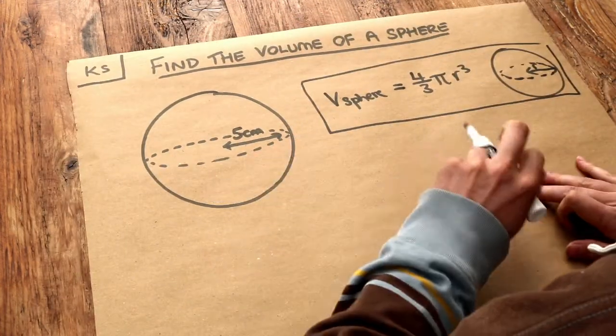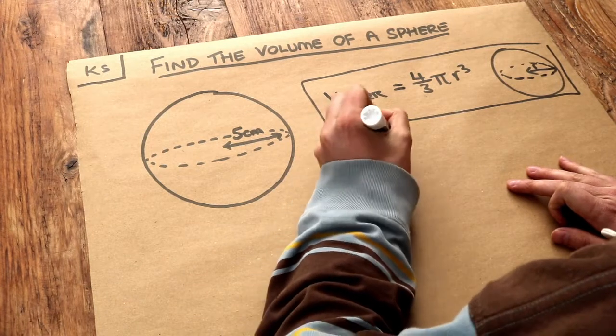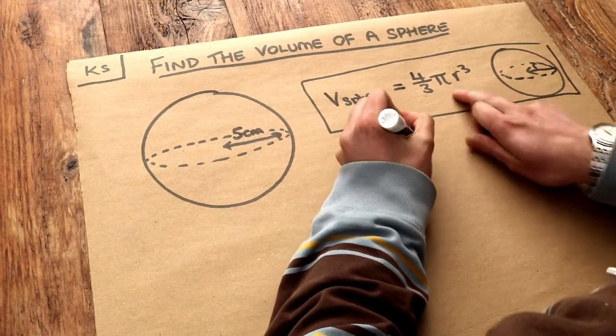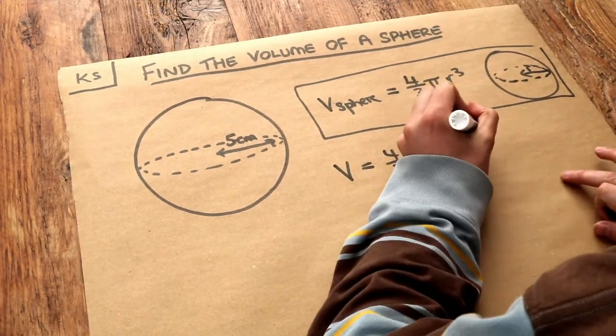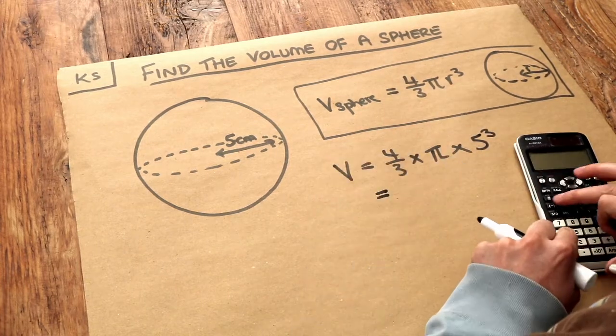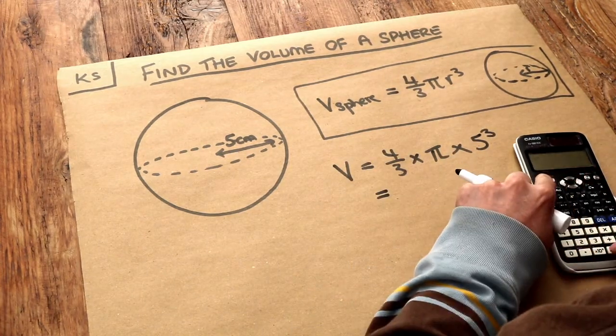So let's just apply it to this example here. The volume is going to be 4 thirds multiplied by pi multiplied by the radius cubed, so 5 cubed. If we put that in our calculator, 4 thirds times by shift pi times by 5 cubed is equal to...